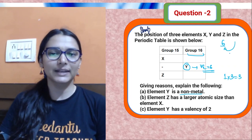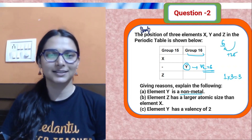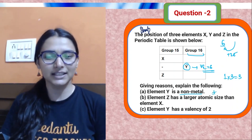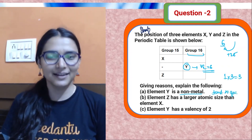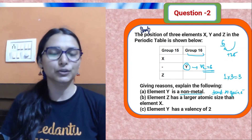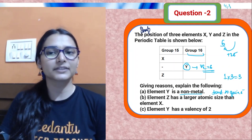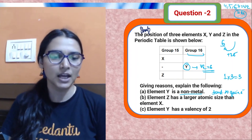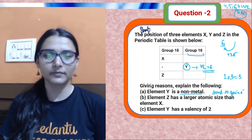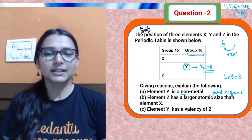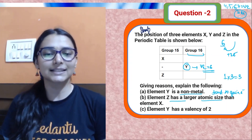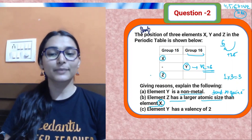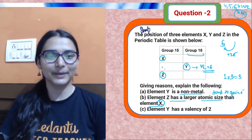Element Y has six valence electrons and needs only two more electrons to complete its octet and get stabilized. Non-metals are electron acceptors — they have the tendency to gain electrons. That is why Y is a non-metal. Generally, elements with four, five, six, or seven valence electrons are non-metals, excluding metalloids.